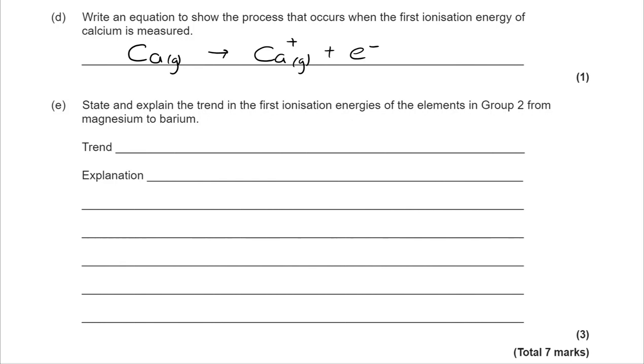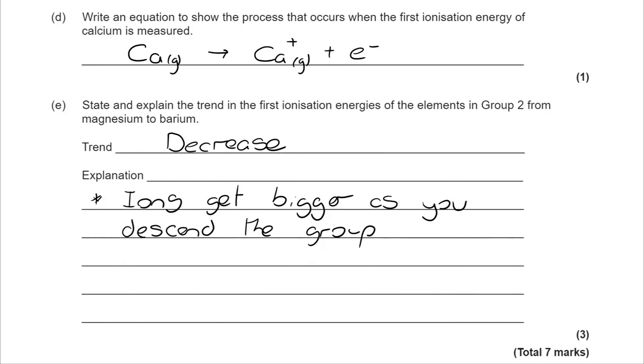And finally, for part E, state and explain the trend in first ionization energies of the elements in group 2 from magnesium to barium. Well, first of all, you have to know that the trend is a decrease. If you don't get that right, you can't get any explanation marks. But why does it decrease? Well, as you go down the group, the ions or the atoms get bigger as you descend the group. It is atoms, really, because the atoms lose the electrons to become ions, but they get bigger as you descend the group.